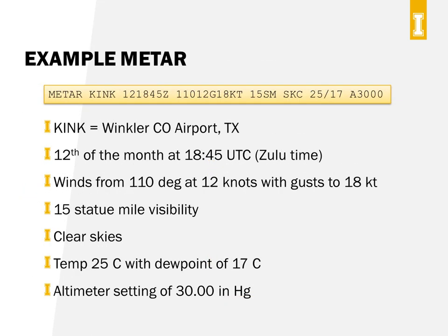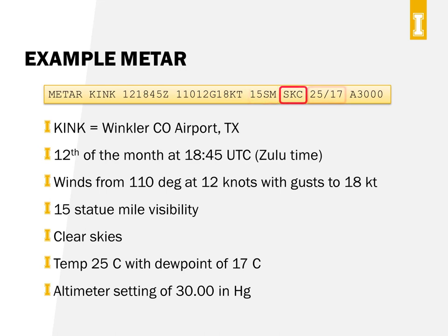Let's look at a couple of METAR reports — these come from Figure 12 in Appendix 2 of the testing supplement, so you may see them on your Part 107 test. The first is for station KINK — Winkler County Airport in Texas — issued on the 12th at 1845 UTC. Wind was from 110 degrees at 12 knots with gusts to 18 knots. There was 15-mile visibility and clear skies. Temperature was 25°C with a dew point of 17°C, and the altimeter setting was 30 inches of mercury.